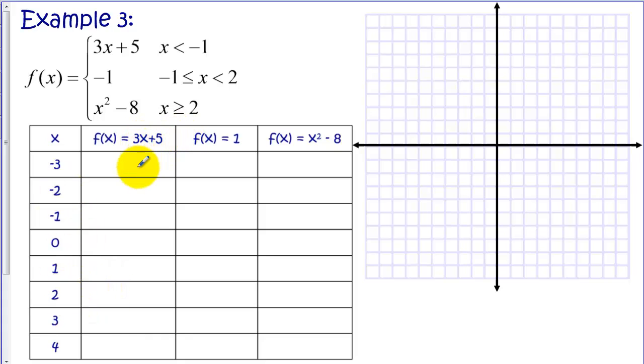Now for our first function, we're only going to be going up to -1. And we're going to have an open circle here. So just so we don't bother calculating for function 1, we're going to cross those parts out. And for function 2, we can cross these values out. We will fill in for -1, 0, 1.